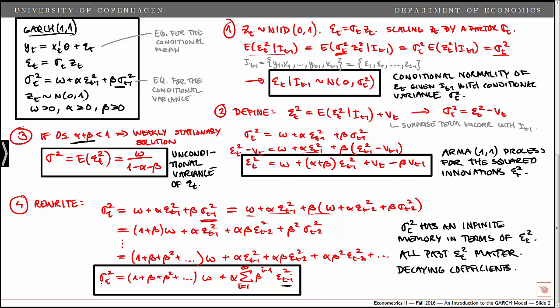This is why the GARCH(1,1) model is typically much better at fitting the data compared to ARCH models. That's it for now, thanks for watching.